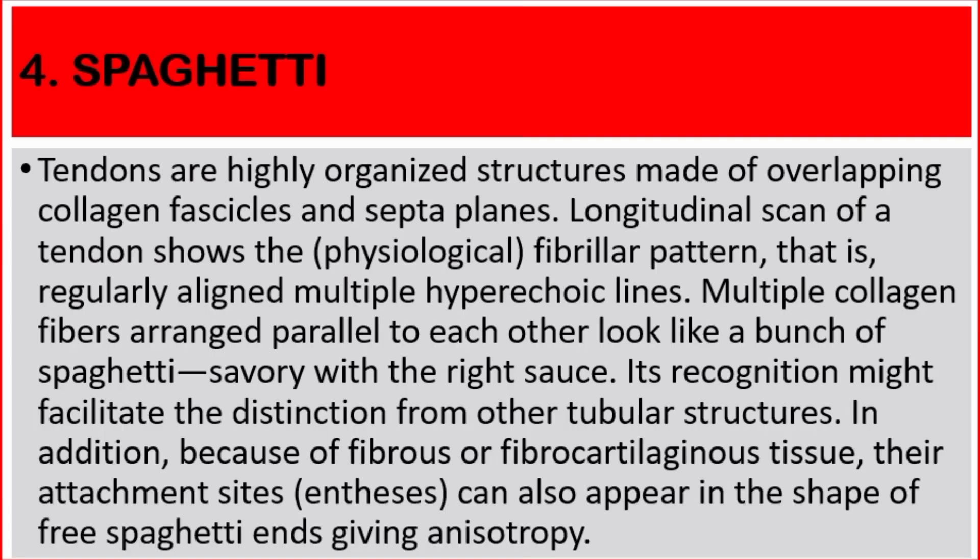Number four: spaghetti. Tendons are highly organized structures made of overlapping collagen fascicles and septa planes. Longitudinal scan of a tendon shows the physiological fibrillar pattern that is regularly aligned — multiple hyperechoic lines, multiple collagen fibers arranged parallel to each other — looking like a bunch of spaghetti. Its recognition might facilitate the distinction from other tubular structures. In addition, because of fibrous or fibrocartilaginous tissue, the attachment sites can also appear in the shape of spaghetti ends.